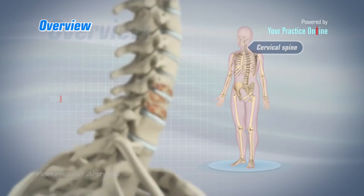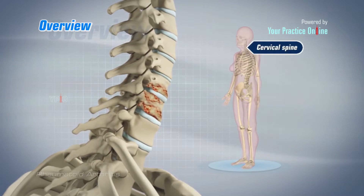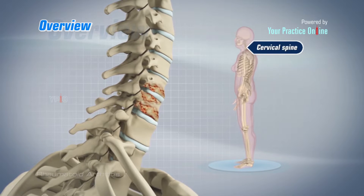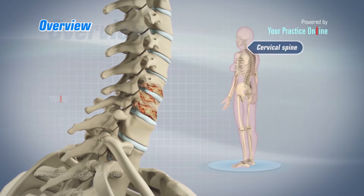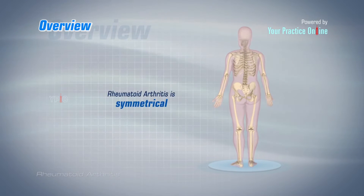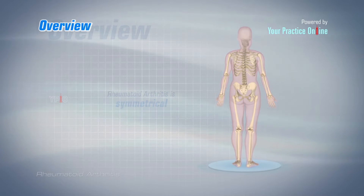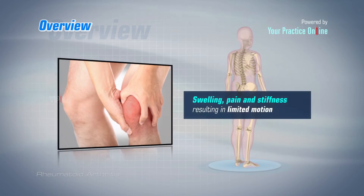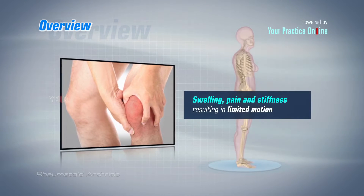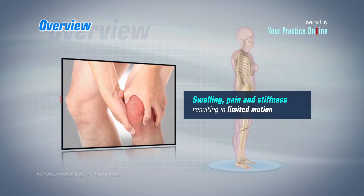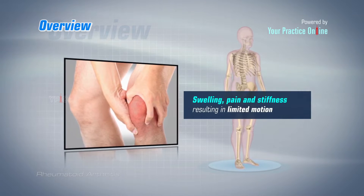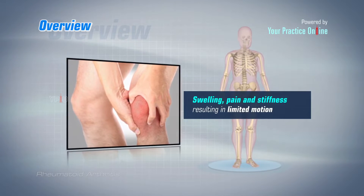The cervical spine or neck area may be involved in later stages of the disease. Rheumatoid arthritis is symmetrical, meaning the same corresponding joint on the other side of the body is also affected. The affected joints present with swelling, pain, and stiffness, resulting in limited motion.